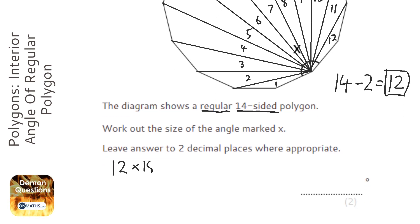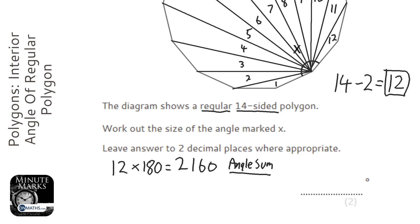If each triangle adds up to 180, then all the angles are going to add up to 12 times 180. On the calculator, 2160. So that's the angle sum, that's all the angles added together.